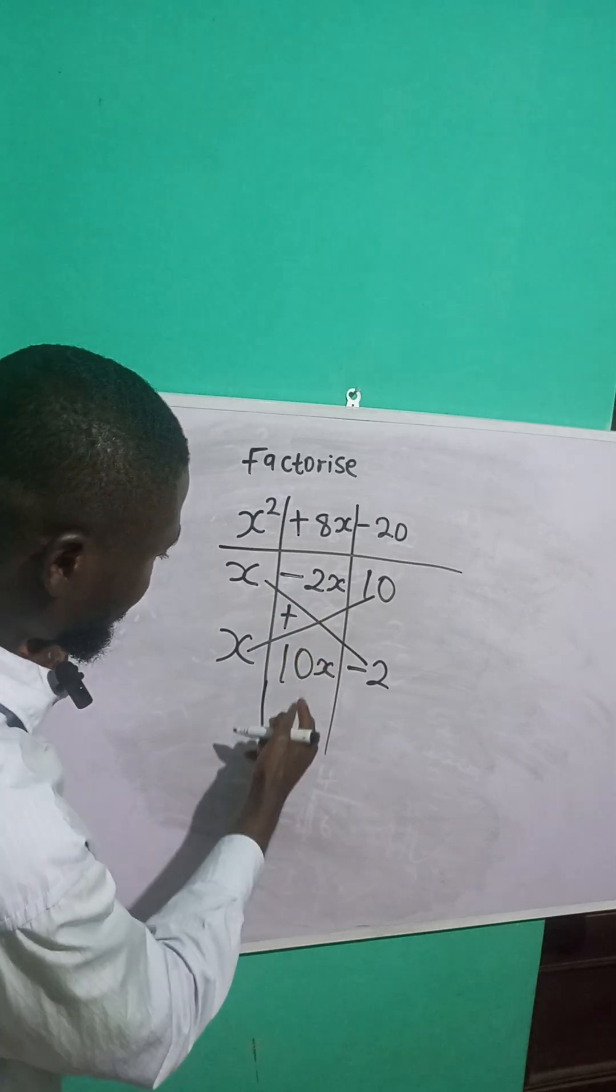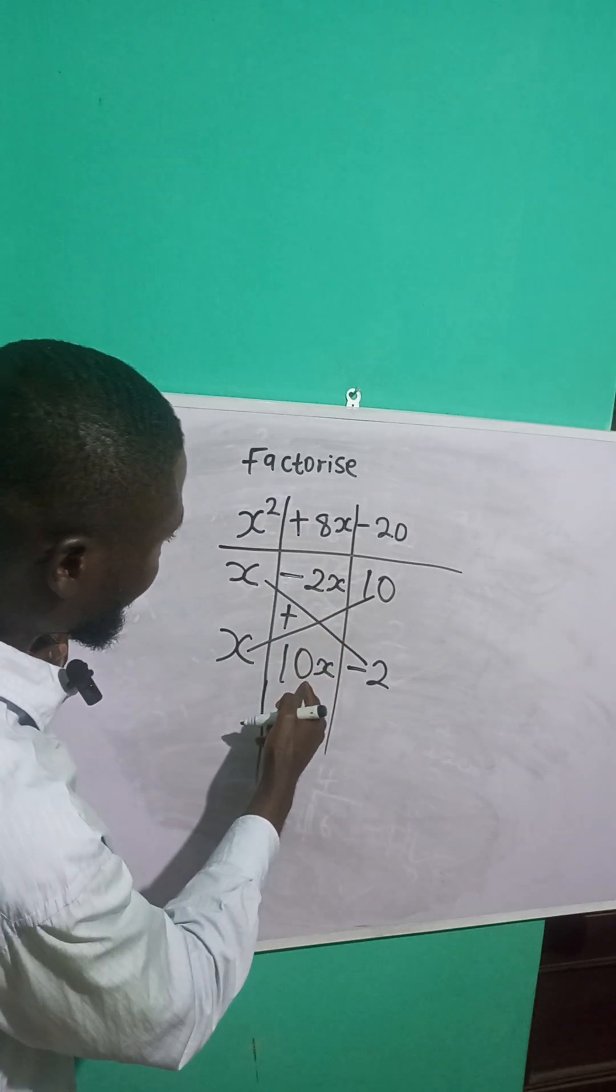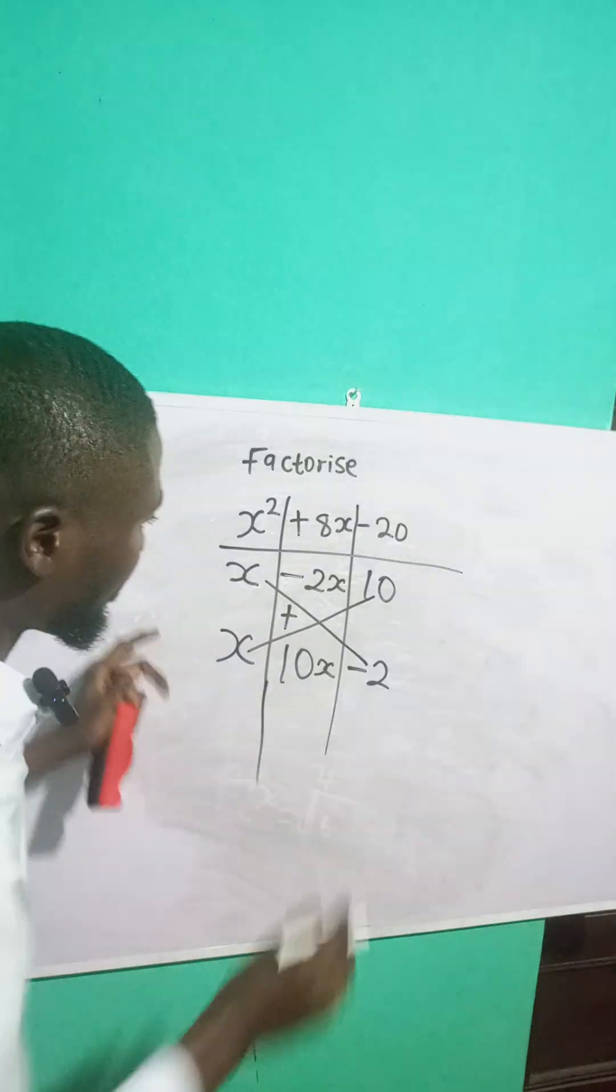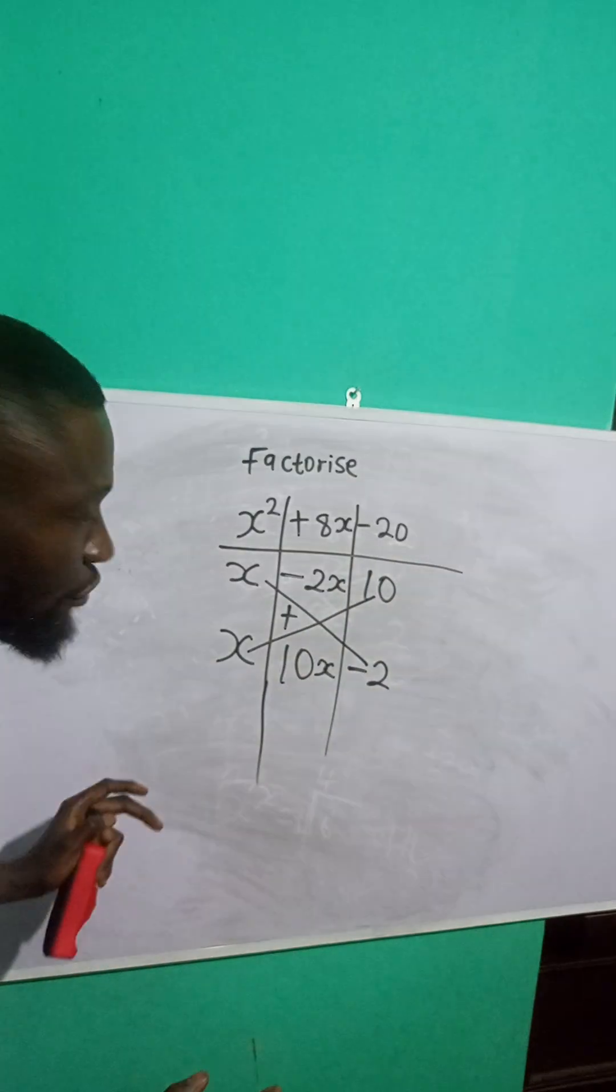So I'll add these two numbers. Minus 2x plus 10x is what? It's 8x. You can see everything I have. They have corresponded.